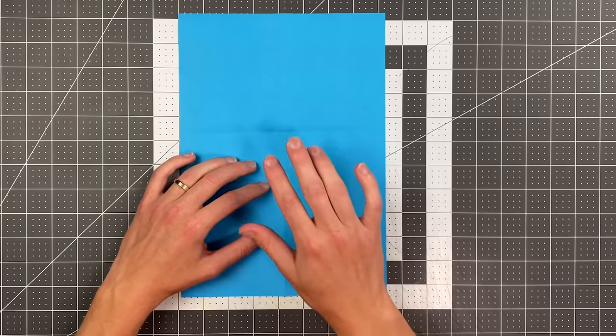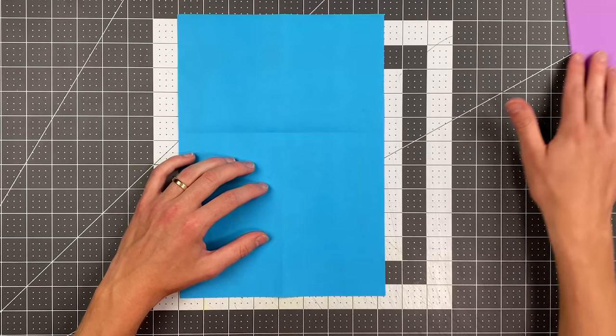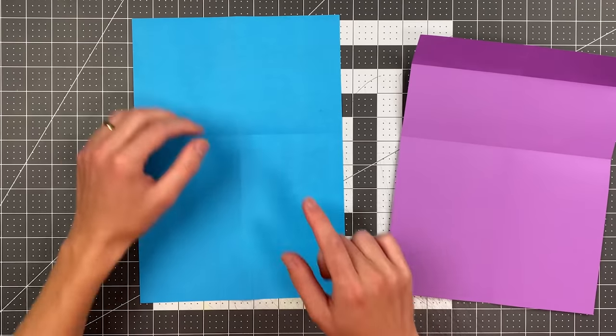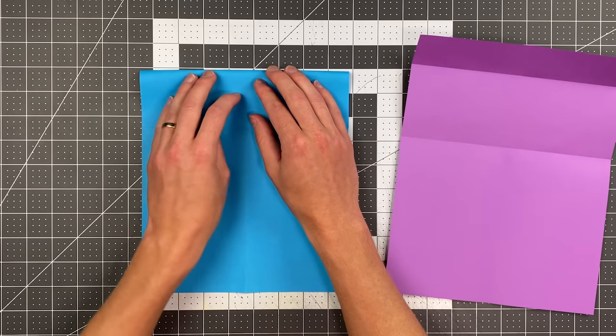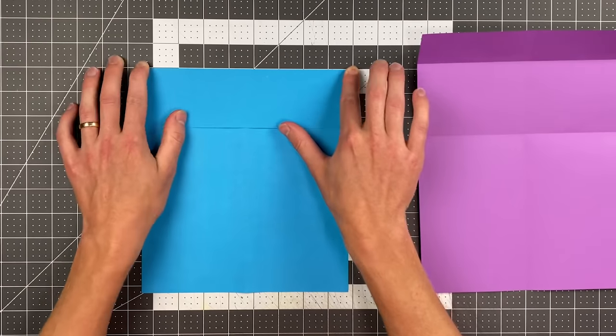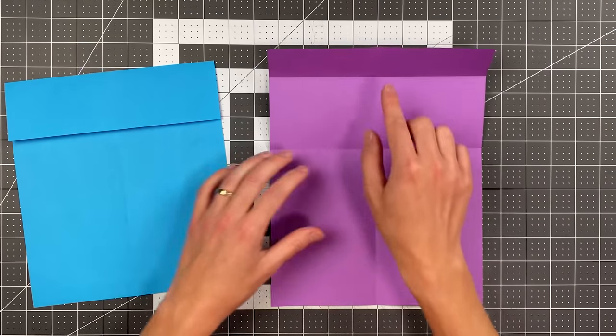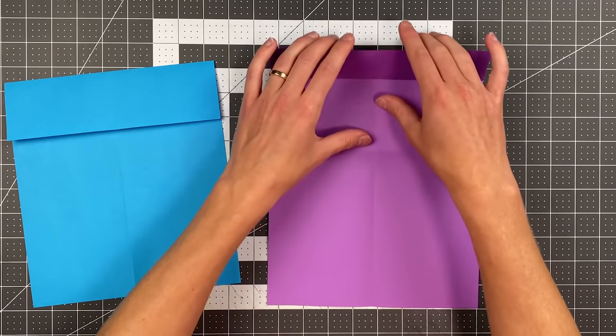Now there is a very slight difference between the A4 version and the eight and a half by 11 version and that is on this step. With the A4 version we're just folding the top edge to that crease we just made. With the eight and a half by 11 version just fold the top one and a half inches down.